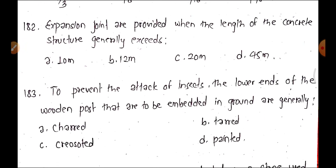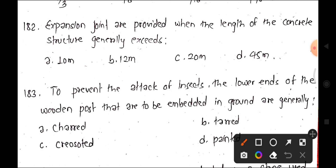Question 182: Expansion joints are provided when the length of a concrete structure generally exceeds — options are A: 10 meters, B: 12 meters, C: 20 meters, or D: 45 meters. Generally, expansion joints are provided at 45 meters. Option D is correct.